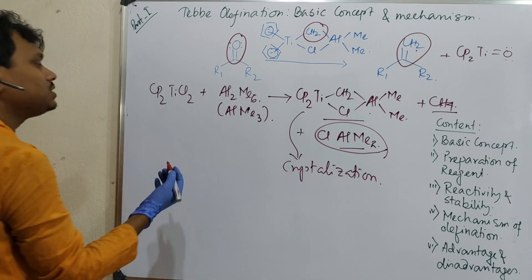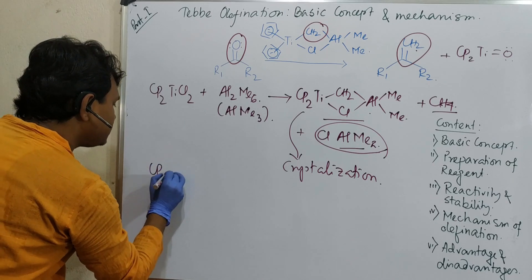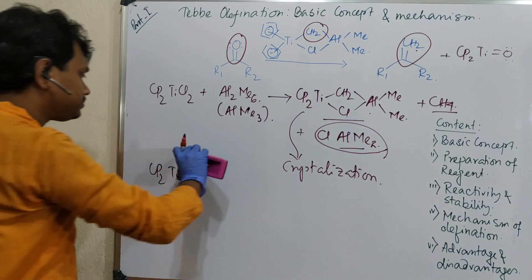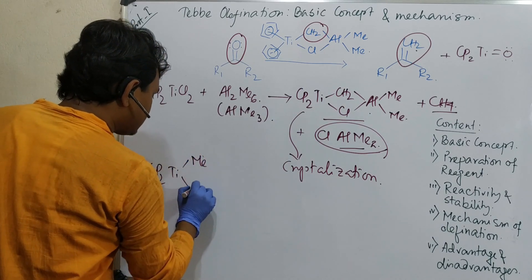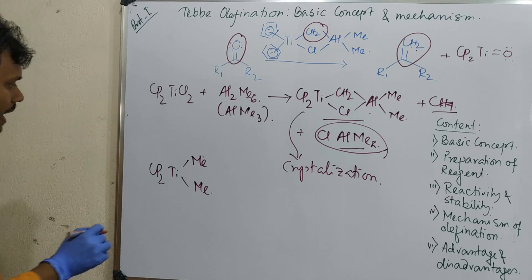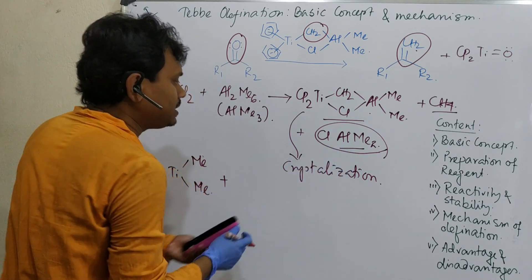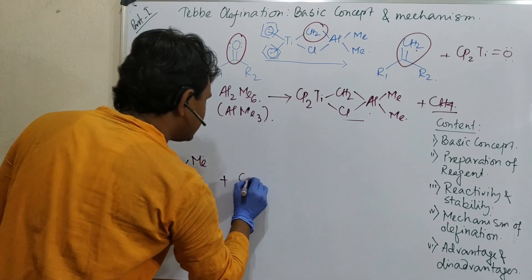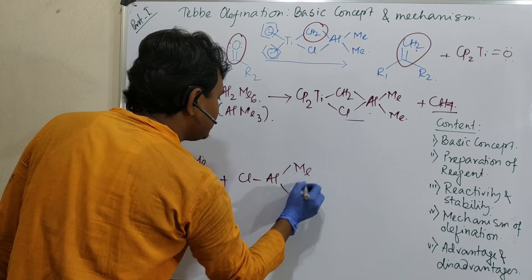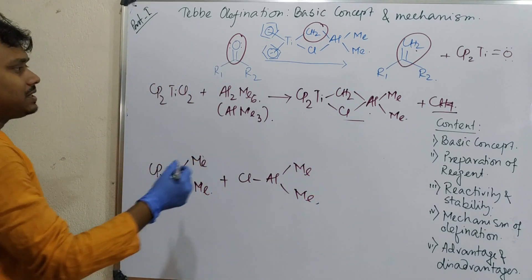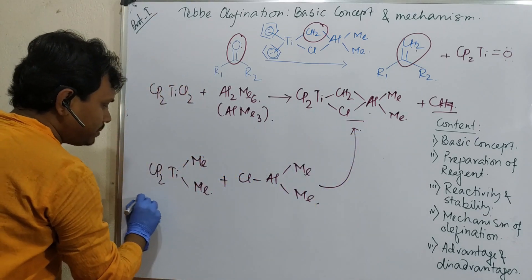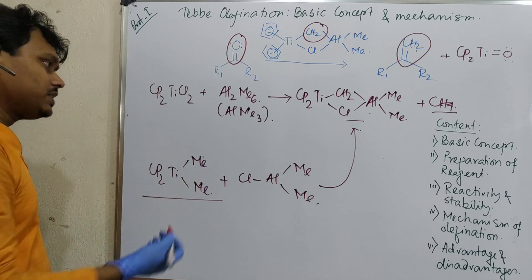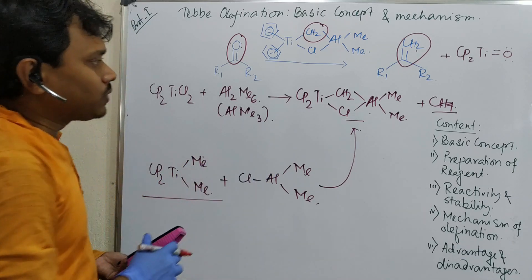Another way of preparation, that is using a Petasis reagent. What does it mean? This Cp2Ti, sorry not Cl, this is dimethyl. This is dimethyl reagent, and this dimethyl reagent reacts with this aluminum, it is in this way you can remember. ClAlMe2 and ultimately results in the same compound. So this is actually Petasis reagent. So based on this reagent there is another method of olefination, that is Petasis olefination. I shall discuss in some next videos. So in this way this reagent is prepared.